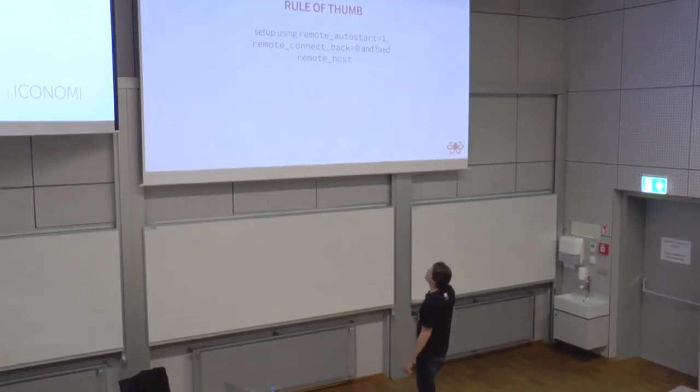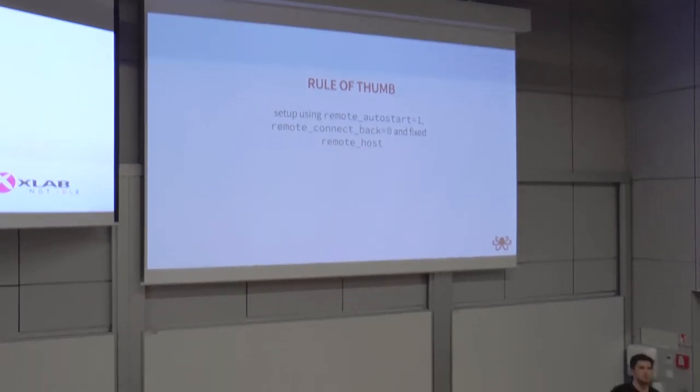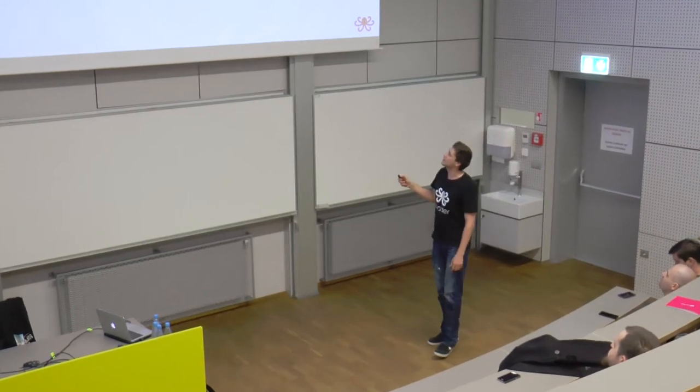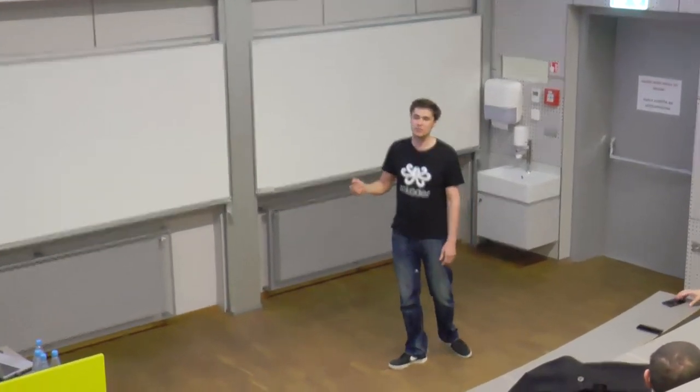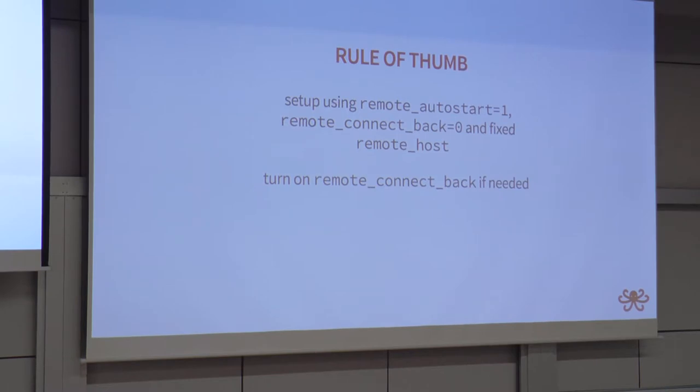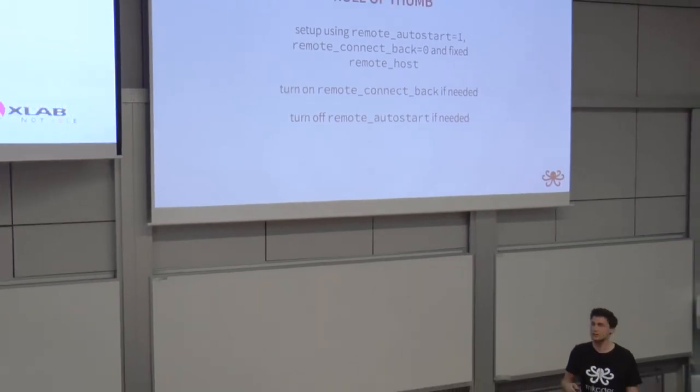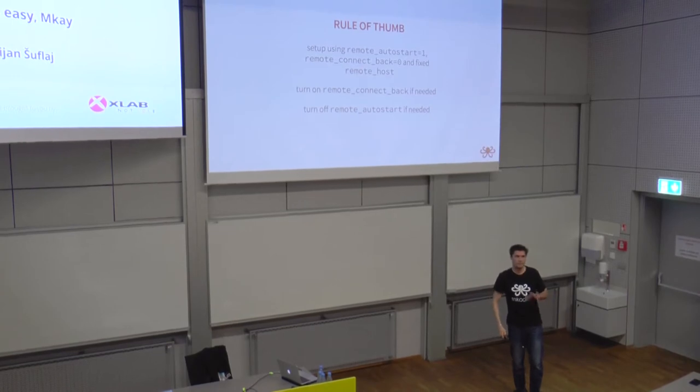Some rule of thumb: set up using remote_autostart equal to one so it always tries to connect. Set remote_connect_back equal to zero so it uses the remote_host as an IP. Set a fixed remote_host. Then when everything works, turn on remote_connect_back if needed. And then turn off remote_autostart if you don't need it, so PHP will try to initiate Xdebug connection only if you specify some trigger.